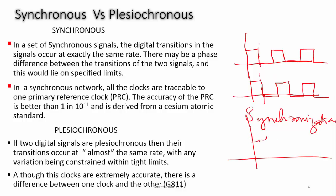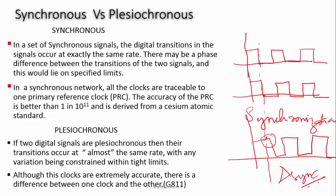Whereas if there is a time difference in the digital transitions, that signal is asynchronous. If this phase difference is within the tight limits mentioned in G.811, then it is called plesiochronous. In synchronous networks all network elements are traceable to a Primary Reference Clock (PRC), whose accuracy is one in 10 to the power of 11 — meaning only one bit can go wrong in 10^11 bits — and which is derived from a cesium atomic standard.